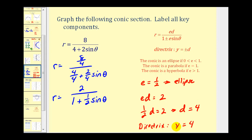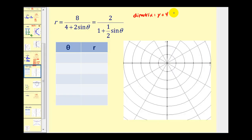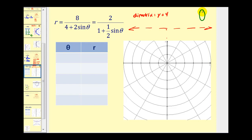Let's take this information and start to graph our ellipse. We'll start by graphing our directrix at y equals four. Remember on the unit circle, sine theta is equal to y, and that helps me remember that since this equation contains sine theta, the major axis of this ellipse will be along the y-axis, where one focus is at the pole. We can find the endpoints of the major axis by selecting theta equal to pi over two and three pi over two.